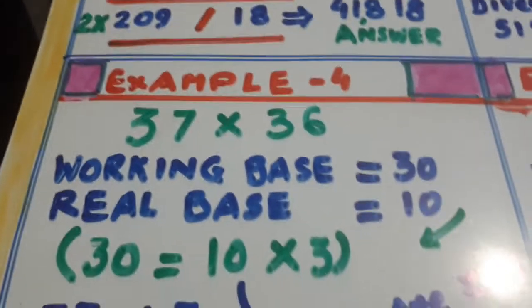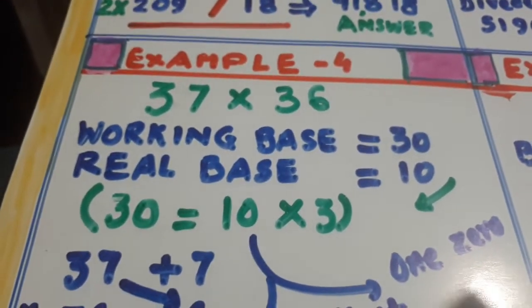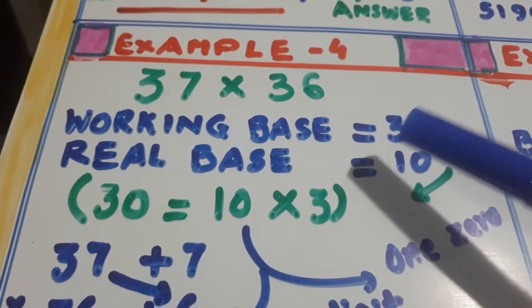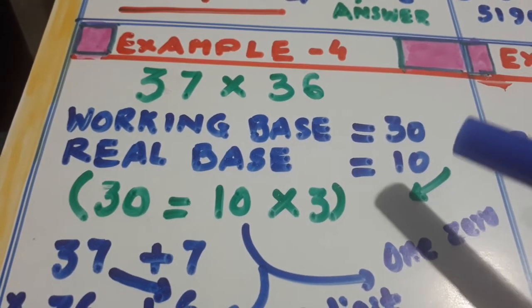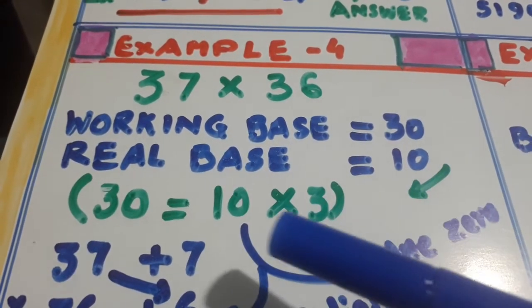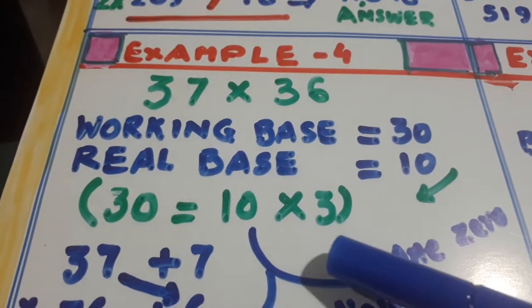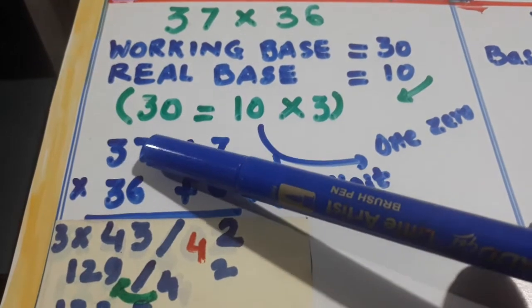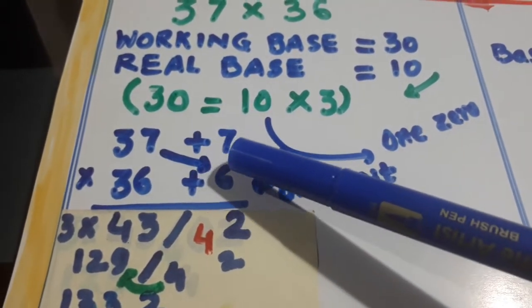Now supposing you want to multiply 37 with 36. Working base is 30, real base is 10. So 30 can be written as 10 into 3. So the working base is 30. How much is more? 37, 7.